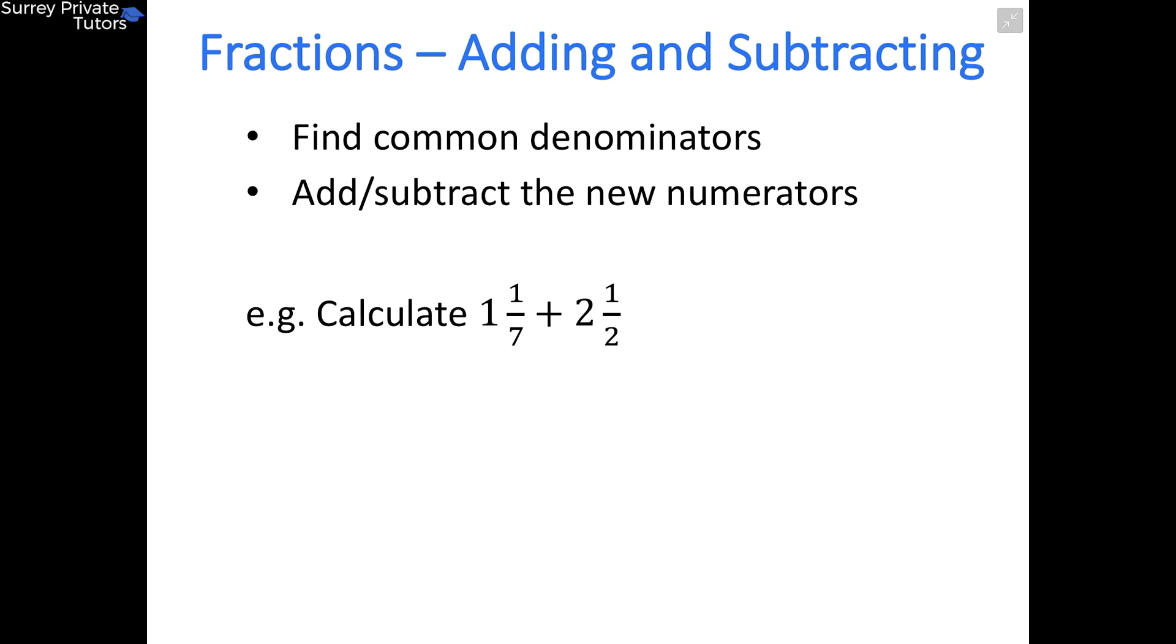So this example, we've got 1 and 1/7 plus 2 and 1/2. First step, you want to convert those mixed numbers into improper fractions. So 1 and 1/7 becomes 8/7. And again, we've gone over this in a previous section, so if you're a bit unsure, maybe go back and watch that part again. So 1 and 1/7 becomes 8/7, and 2 and 1/2 becomes 5/2.